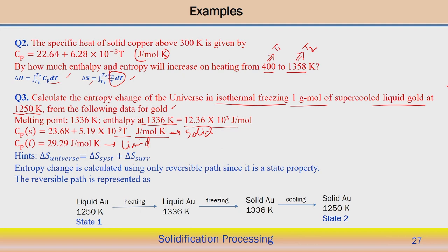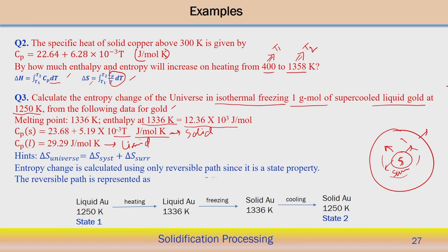We represent the problem with the universe as an isolated system. Total entropy change of the universe equals the entropy change of the system plus the entropy change of the surroundings. Entropy change is calculated using the reversible path since it is a state property: dS = dQ/T. At a particular temperature T, the heat supplied dQ is equivalent to the entropy change dS.